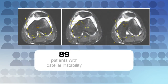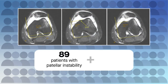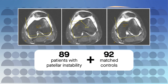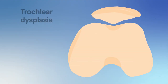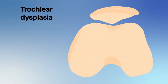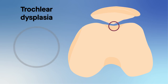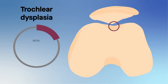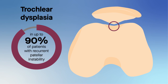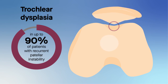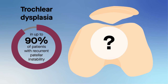Researchers examined knee MRIs of 89 patients with patellar instability and 92 matched control patients. Previous studies have shown that trochlear dysplasia — a condition in which the trochlea is not properly shaped to contain the patella — is present in up to 90% of patients with recurrent patellar instability. That motivated the team to determine the effects of trochlear dysplasia on the TT-TG measurement.